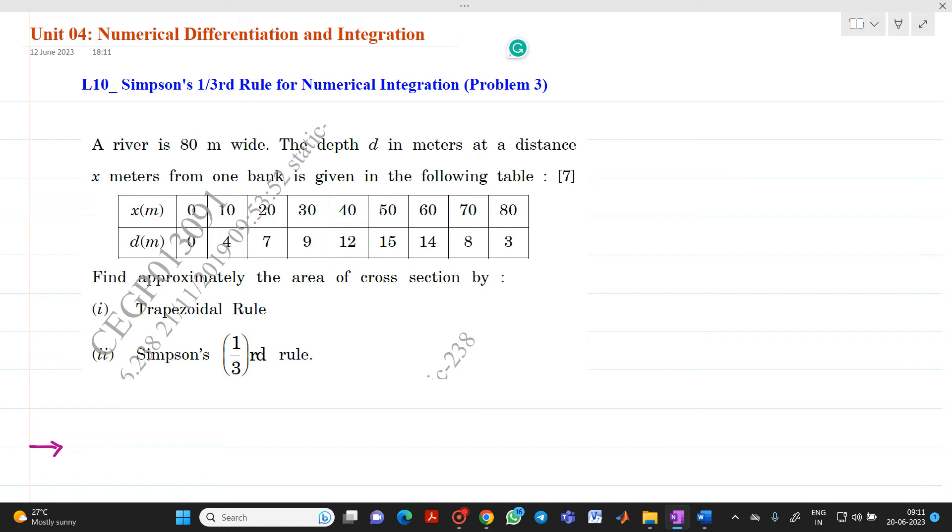A river is 80 meters wide. The depth d in meters at a distance x meters from one bank is given in the following table. So we have data x and d is the depth, you can see it as y. We have data from 0 to 80 and depth has been given in meters. Find approximately the area of cross section.